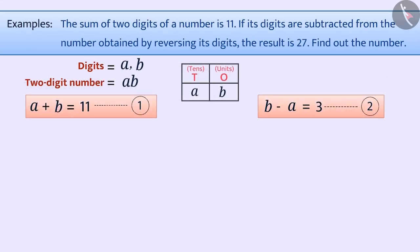Now, with the help of both equations, we can find the value of A and B. Since B minus A is equal to 3, we can write B is equal to A plus 3. Now, we can place the value of B in the first equation.